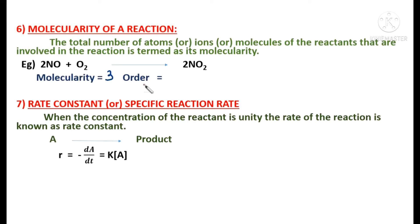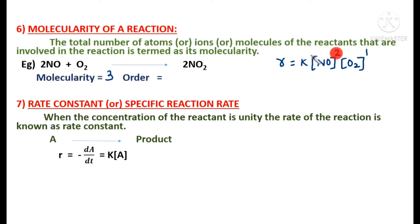How to find the order of this reaction? The rate expression is R = k[NO]²[O₂]¹. The power on NO is 2 and the power on O₂ is 1. So order = 2 + 1 = 3. For this example, molecularity and order of the reaction are both three. This is how you find molecularity and order of a particular reaction.